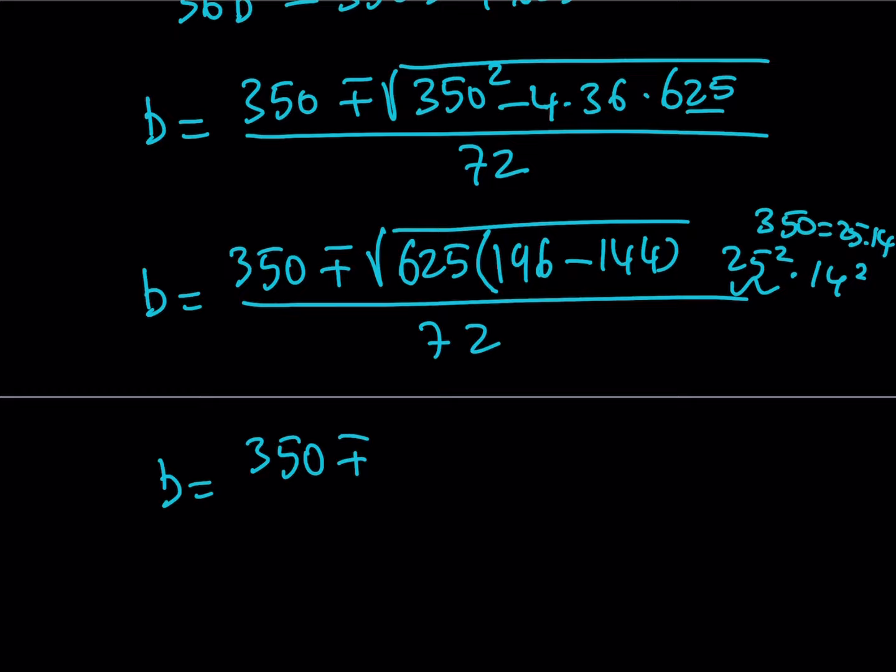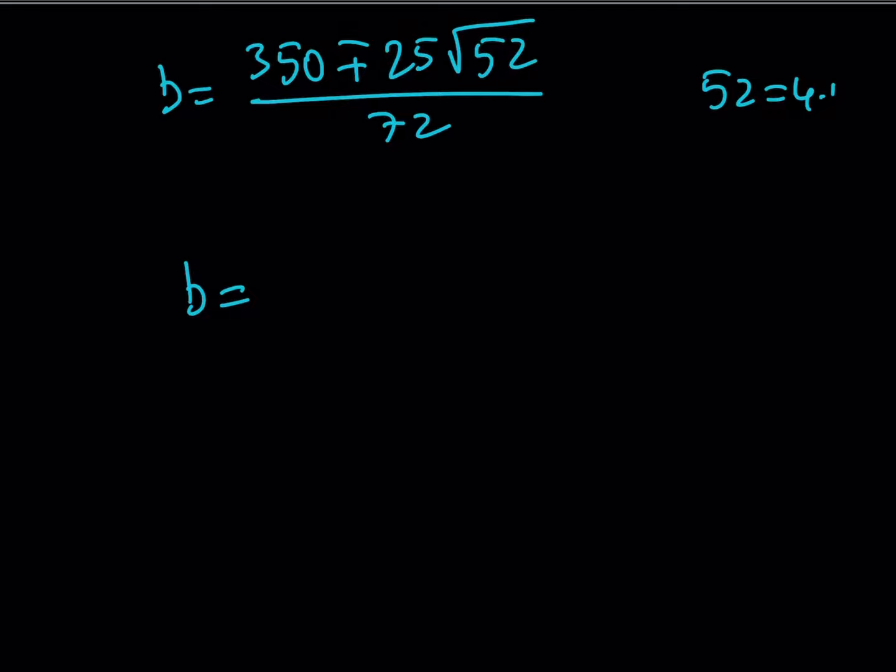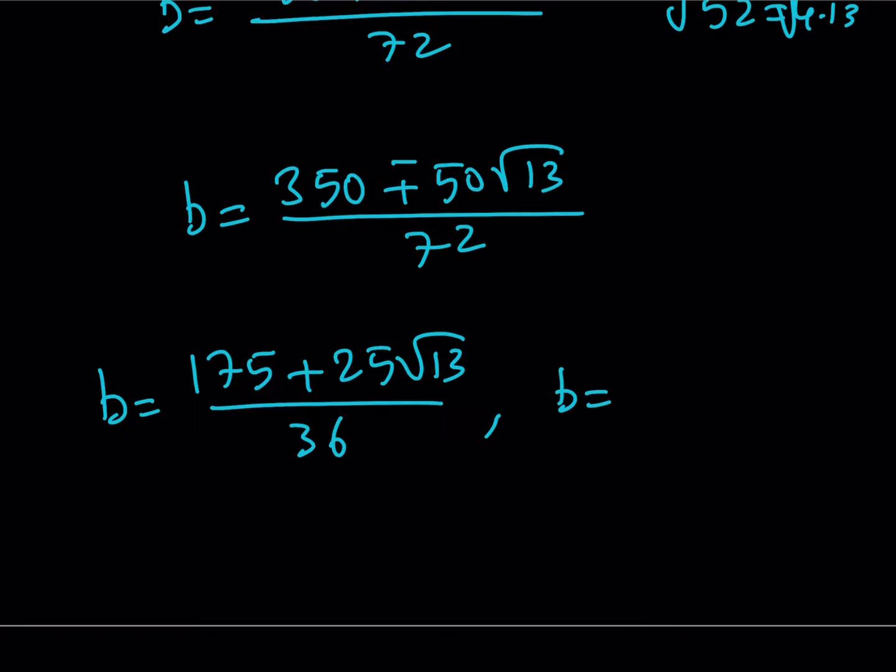Divide by 72. And then from here, I can get, let's see, the square root of 625 is 25. 196 minus 144 is equal to 52. Let's do it in the next step. Divide by 72. And then b is going to be what? 52 can be written as 4 times 13, so it's going to be 2√13. Multiply by 25 is going to be 50√13. So, to keep a long story short, you're going to get something like this. Now, we're going to divide everything by 2 and split up the solutions. b₁ = (175 + 25√13)/36. And b₂ is going to be (175 - 25√13)/36.